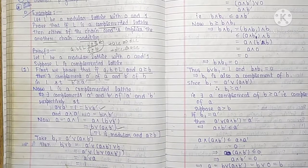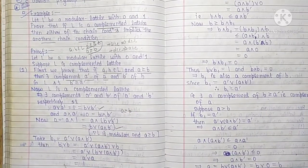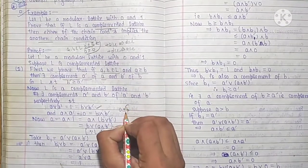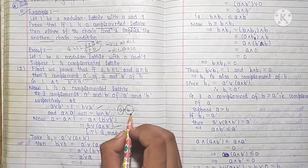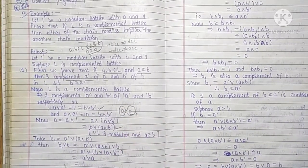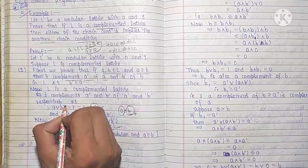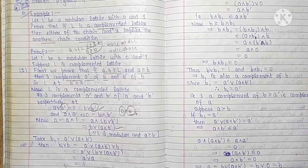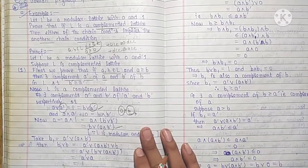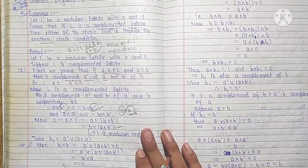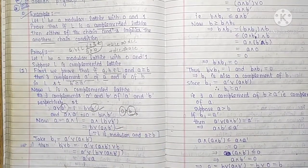Our goal is: we are given A ≤ B, and we have to show that B' ≤ A', meaning B' is less than or equal to A'. We need to find a complement of B — call it B1 — which is greater than or equal to A'. We have studied that complements in a lattice, and we need to find this element B1 that is the complement of B and satisfies B1 ≥ A'.